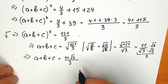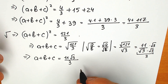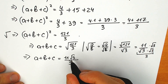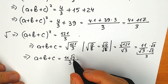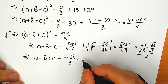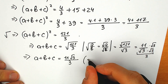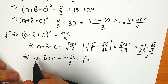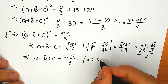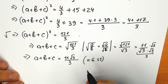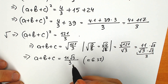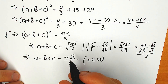We need to find a plus b plus c, so we apply the square root to both sides. a plus b plus c equals the square root of 121 over 3. Using the square root property, this splits into square root of 121 over square root of 3, which is 11 over square root of 3. Rationalizing, our final answer is 11 square root of 3 over 3. Approximately this equals 6.35.